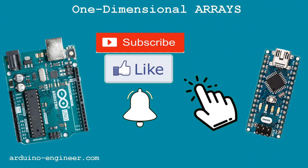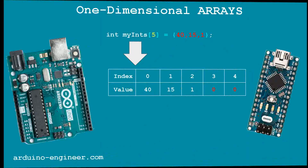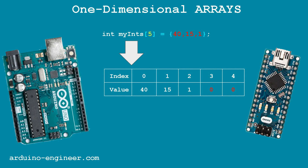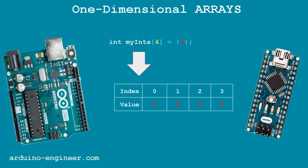What will happen if the dimension of the array in square brackets is greater than the given initial values? An array will be created with the number of elements specified in square brackets, but in the remaining unspecified last cells a zero value will be written. Remember that array cell values are not automatically filled with zeros. For this to happen, at least one element must be filled. If from the very beginning you need to write zeros to all cells of an array, you should declare it in the program with one zero in curly brackets.